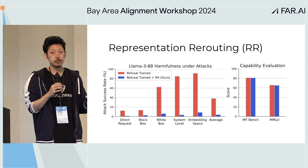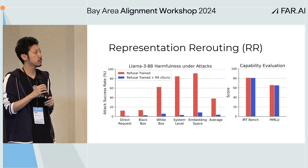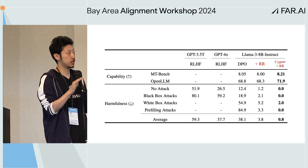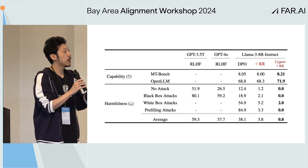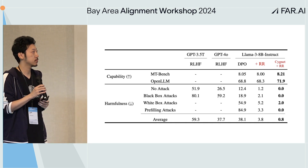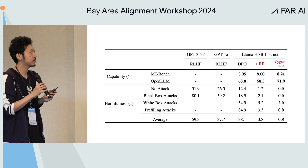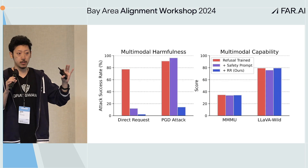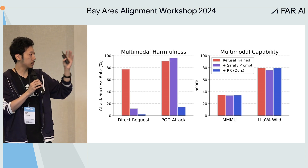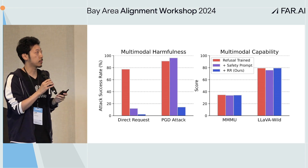What's more, you retain essentially all the capabilities you had earlier. We also trained a better model called Cygnet with additional techniques, reducing harmfulness by about two orders of magnitude — better than all the closed-source models. This works for multimodal models as well, even under very strong white-box PGD attacks, reducing harmfulness significantly while retaining capabilities.